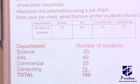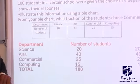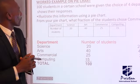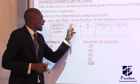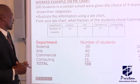Now the question is, draw a pie chart to illustrate this information. I told us, before you can draw the pie chart as in a circle, dividing it into different sectors, you need to know the angle for science, the angle for art, for commercial and computing. How do I get the angle?